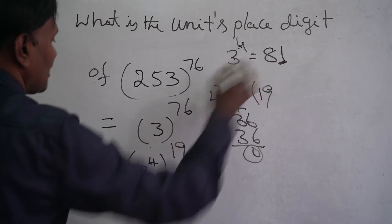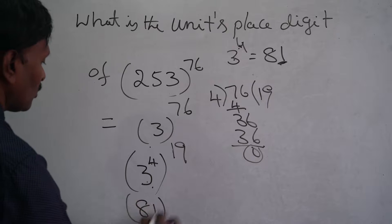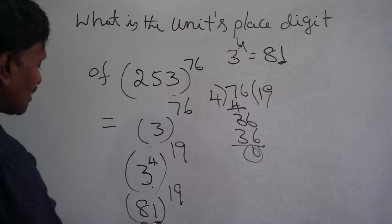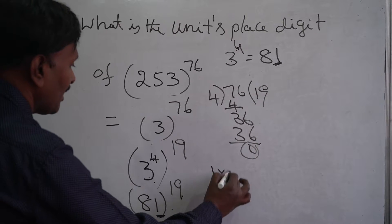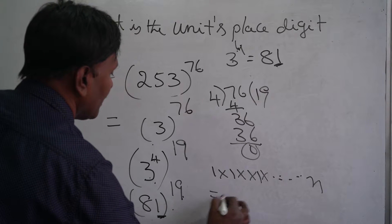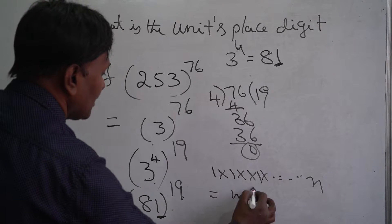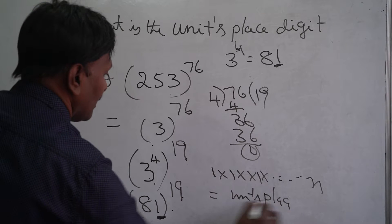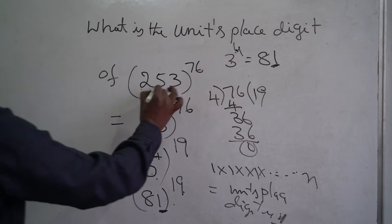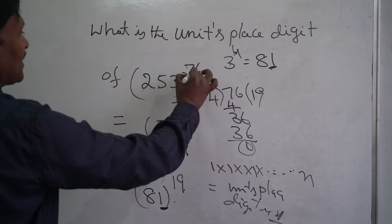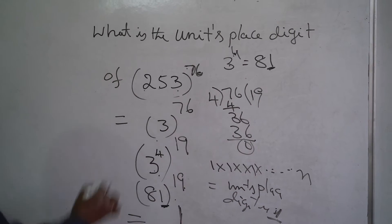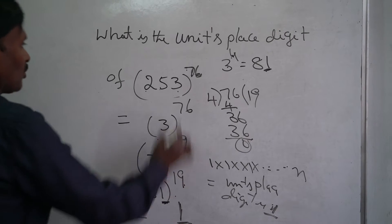It means the units place digit is equal to 1, so this becomes 81 to the power of 19. We know that the units place digit is 1 — if you multiply 1 by itself any number of times, the units place digit remains 1. So 253 to the power of 76 has units place digit 1.